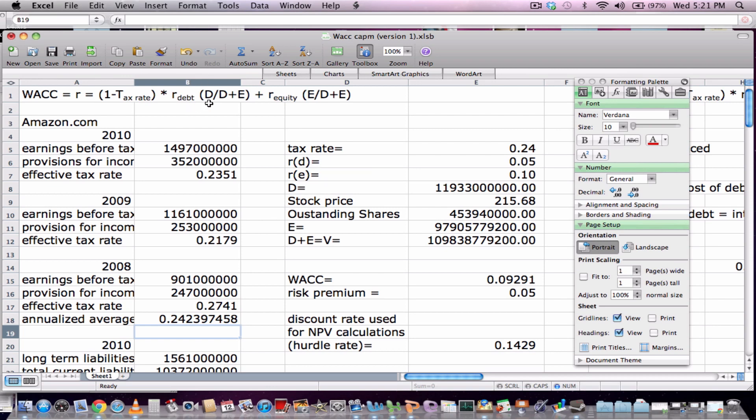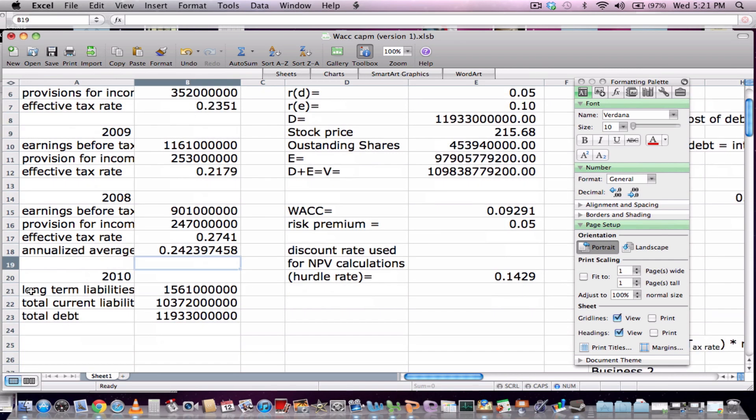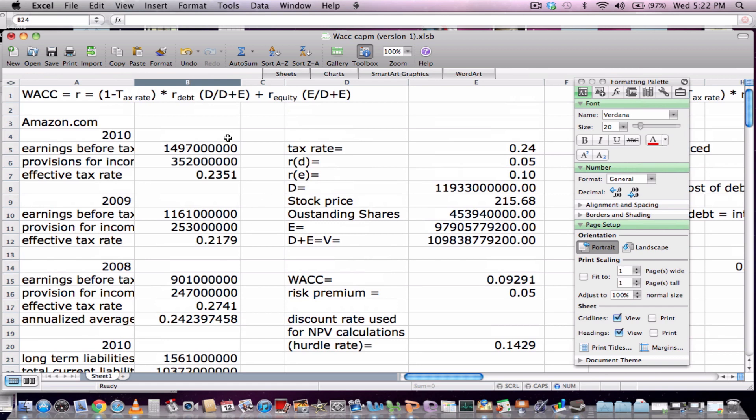Now the next thing we need to do is find their total debt. And this is long-term liabilities plus total current liabilities. Simply add these two, again found on their SEC filings, and you get their total current debt.